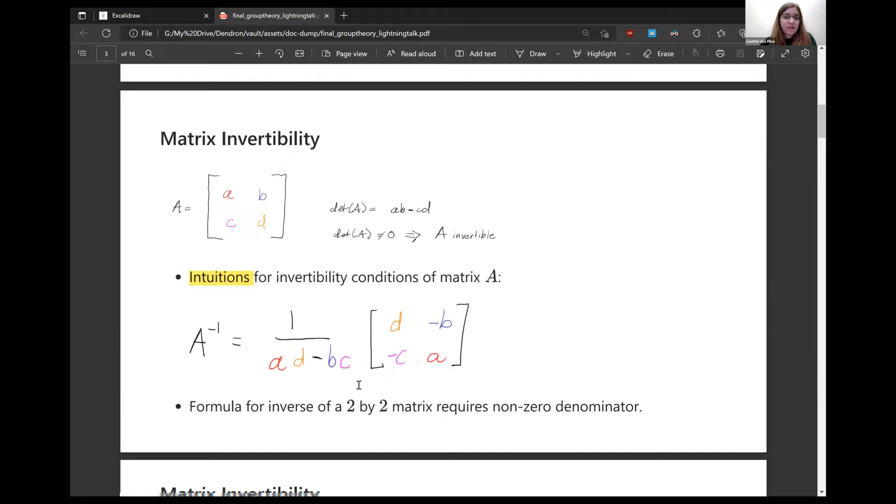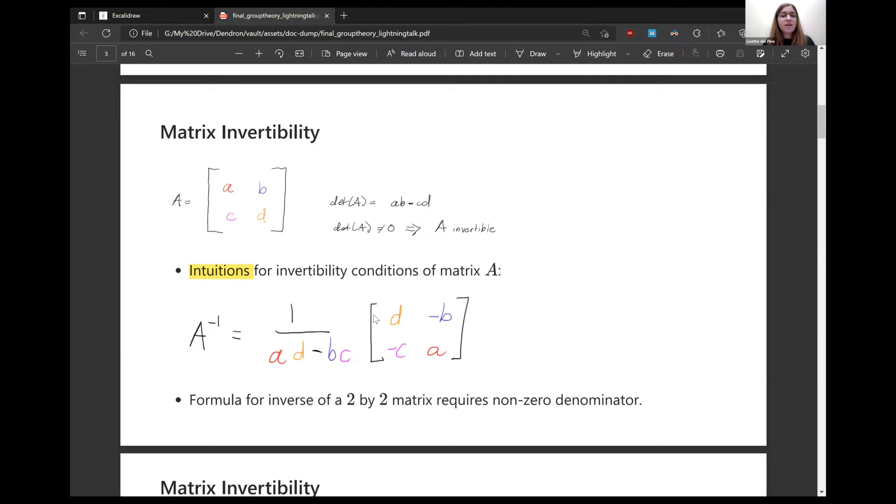So first, this is something I think almost everyone should be familiar with from linear algebra. Remember, matrix invertibility depends on it having a non-zero determinant. So in the case of a 2x2 matrix, the determinant formula is AB minus CD. If it's not zero, we have that A is invertible.